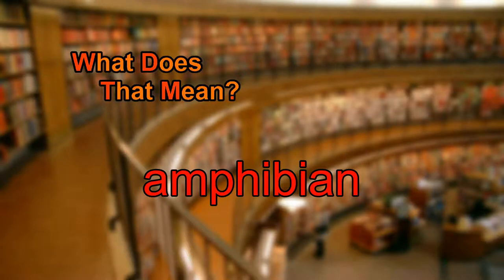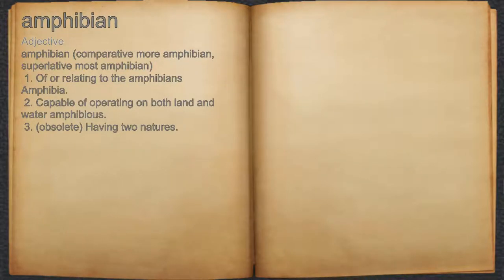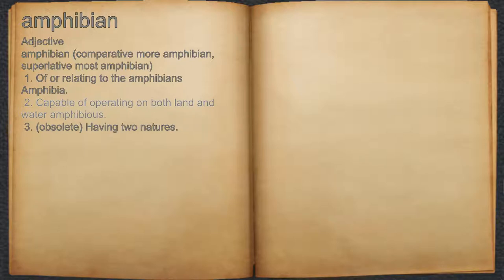What does amphibian mean? Amphibian. Adjective. 1. Of or relating to the amphibians, Amphibia. 2. Capable of operating on both land and water; amphibious. 3. Obsolete: having two natures.